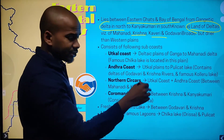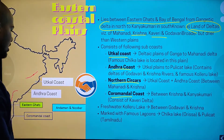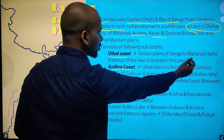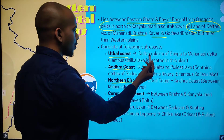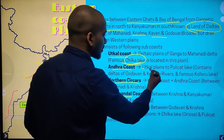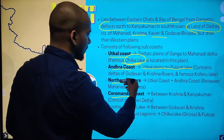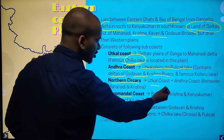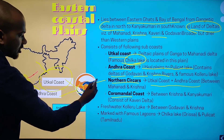The eastern coast can be divided into Utkal coast, Andhra coast, Northern Circars, and Coromandel coast. Utkal coast is the delta-like plains from the Ganga to the Mahanadi delta. The famous Chilika lake is located here in this plain. Then you have the Andhra coast, from the Utkal plains to Pulikat lake, which contains the deltas of Godavari and Krishna rivers. Utkal coast plus Andhra coast together are known as the Northern Circars.